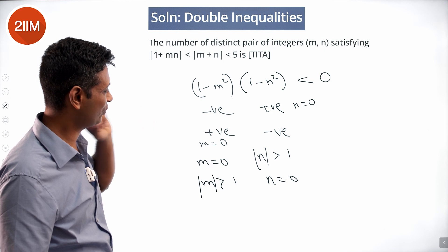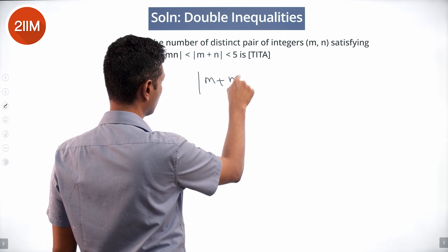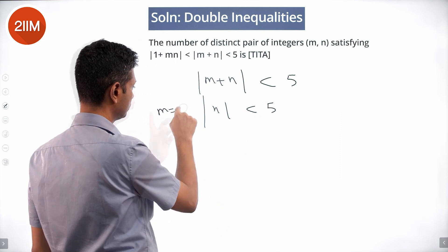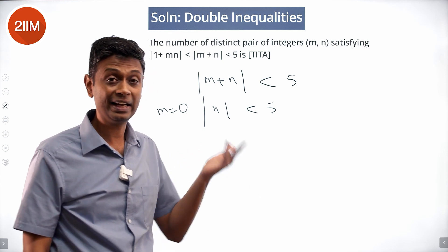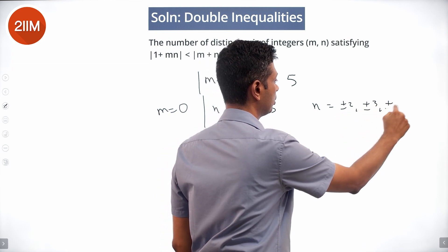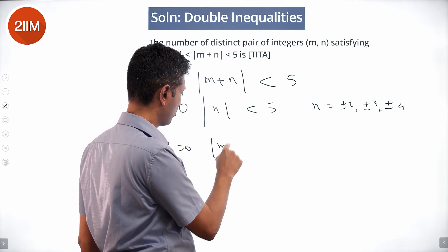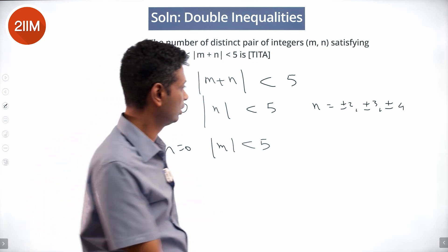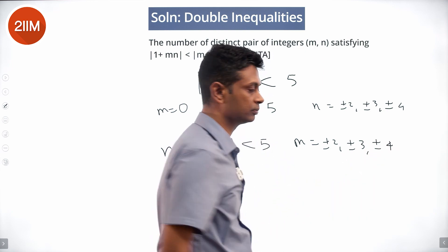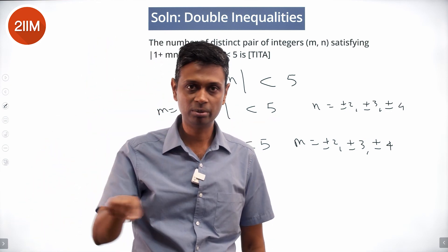Now let's apply the constraint |m + n| < 5. If m = 0, then |n| < 5 with |n| > 1, so n could be ±2, ±3, ±4. Exactly opposite: if n = 0, then |m| < 5 with |m| > 1, so m could be ±2, ±3, ±4.